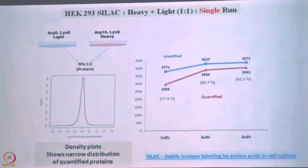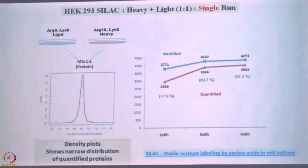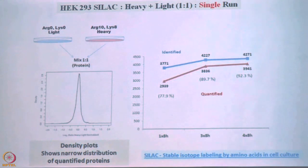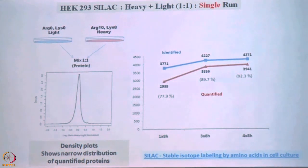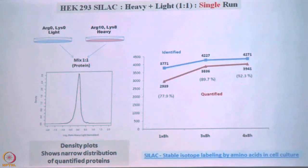This was just an example. The same technique we have developed — we recently published how long a gradient we can use, and after 12 hours the gradient is saturated, so there is no use going longer. So you need to fix how long the gradient should be. Now this technique you should use in SILAC to analyze cancerous cells. In label-free quantitation, 5000 proteins come in one run, but when you do SILAC you get fewer proteins, because now two peaks are needed to identify and quantify a protein.